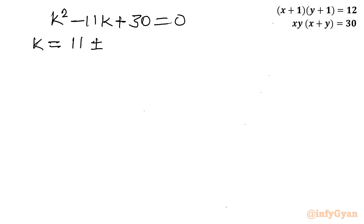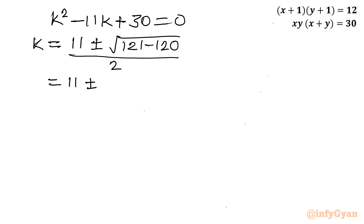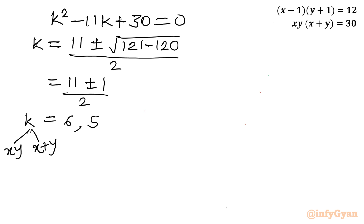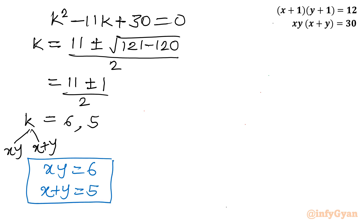Solving k² − 11k + 30 = 0 using the Sridharacharya formula: k = (11 ± √(121 − 120)) / 2 = (11 ± 1) / 2. This gives k = 12/2 = 6 and k = 10/2 = 5. Now we know the k values are xy and x+y, so we can frame two systems: if xy = 6 then x+y = 5, and if xy = 5 then x+y = 6.